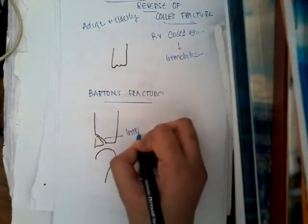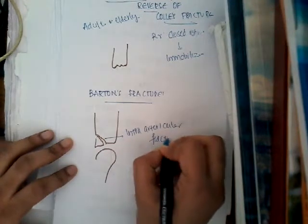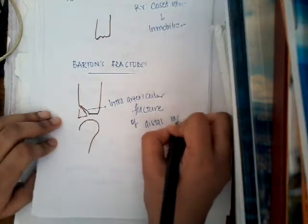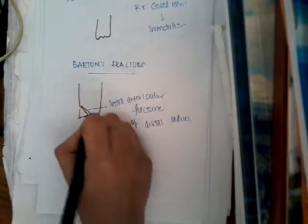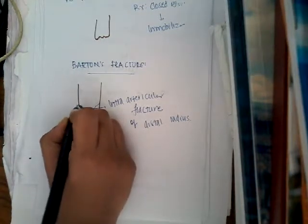Here there is an intraarticular fracture of the distal radius. The fracture extends from the articular surface of the radius to either the proximal part or to the distal cortices. So the fracture starts from the articular surface and then it extends either forward to the anterior cortices or backward to the posterior cortices.